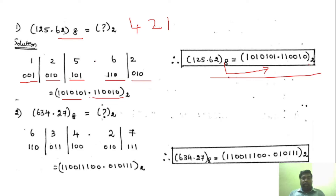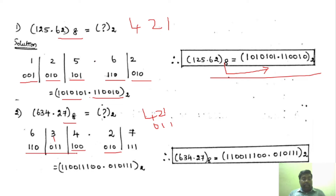The base is very important whenever you convert any number system. Similarly, for the next example, the same steps apply — I am writing each digit separately and using the 421 code. 7 is 111, 2 is 010, 4 is 100, 3 is 011, and 6 is 110. Now I combine the integer part, then dot, then the fractional part. That is the answer.